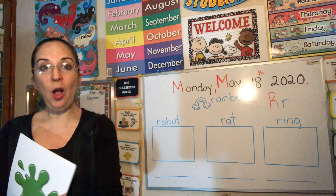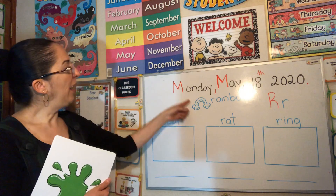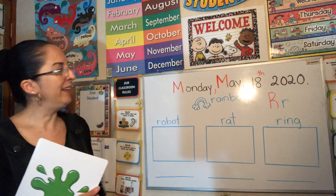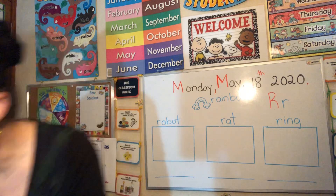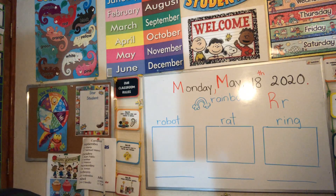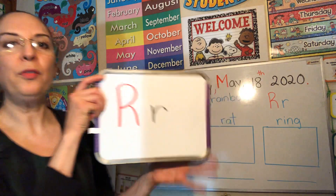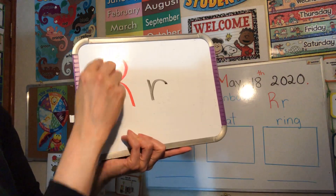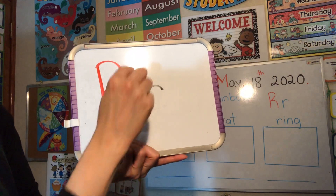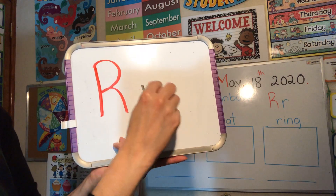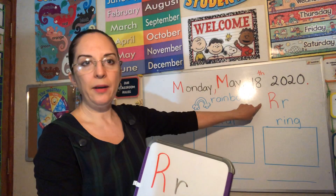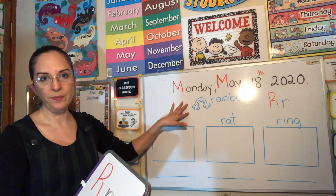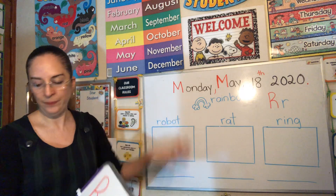Now take out your colors and color the rainbow, please. And trace the letters. Remember: first, capital R and small r. Trace the letters, please. And color the rainbow. Perfect.